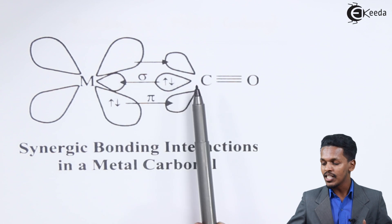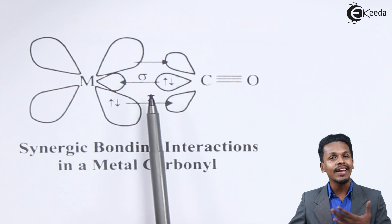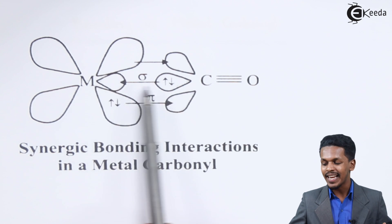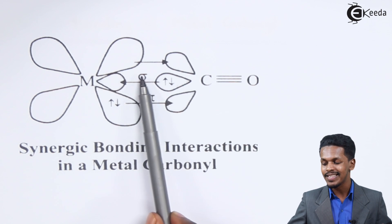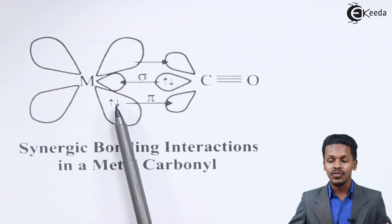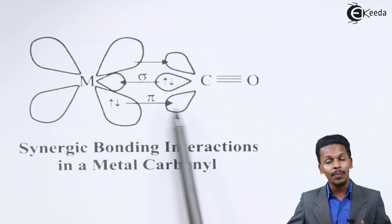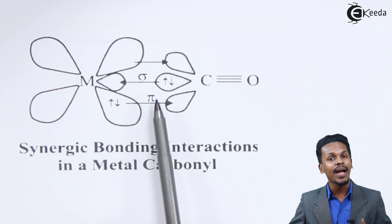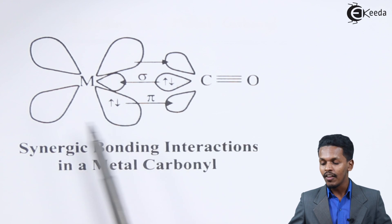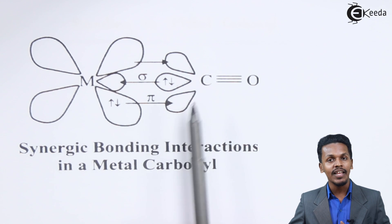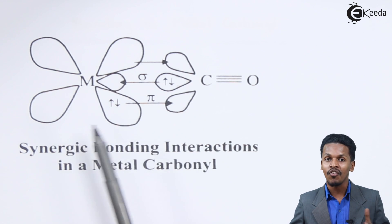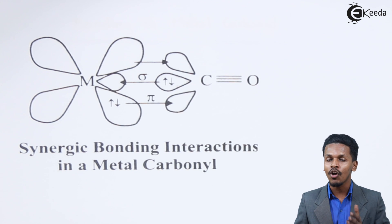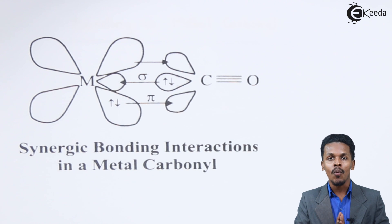Whenever carbon donates its lone pair of electrons to the empty orbital of the metal, it forms a sigma bond. But whenever the metal electrons are donated to the anti-bonding orbital of carbon, it forms a pi bond. This kind of bonding from the metal to the carbon is basically known as back donation or back bonding.